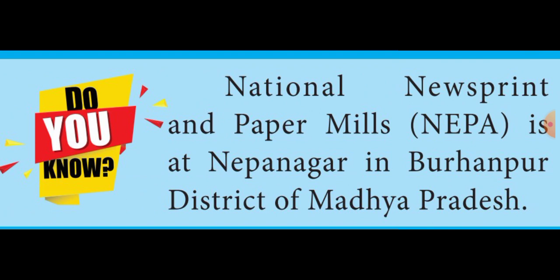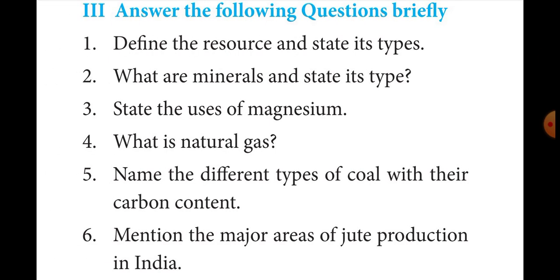The third important type is mineral-based industry, which I will teach in the next class. Now I will take the book and turn to the exercise pages. Roman numeral III — mention the major areas of jute production in India. From the answer-the-following section, the sixth question is: Mention the major areas of jute production in India. Turn to page number 180.